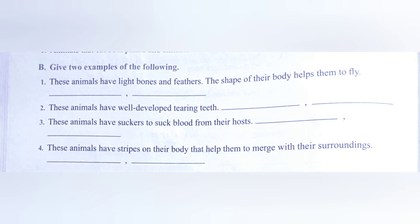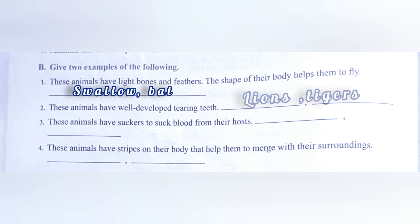Part B: give two examples of the following. First: these animals have light bones and feathers and the shape of their body helps them to fly — swallow and bat. Second: these animals have well-developed tearing teeth — lions and tigers.